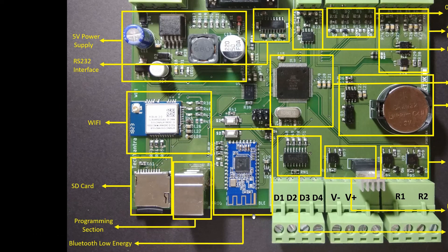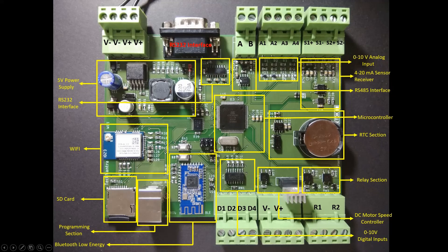The next section is the BLE section, that is Bluetooth Low Energy. With the help of this Bluetooth module, we are going to read all the parameters of the data logger and send those parameters via this Bluetooth module to an Android app, where we will plot those parameters in the form of graphics.